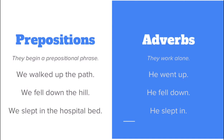Let's take a look at one final example. We slept in the hospital bed. 'In' is going to be our preposition. 'The hospital bed' is the rest of our prepositional phrase — 'the' is an article, 'hospital' is an adjective because it's telling us which bed we slept in, and 'bed' is the object of our preposition. So 'in the hospital bed' is a prepositional phrase.